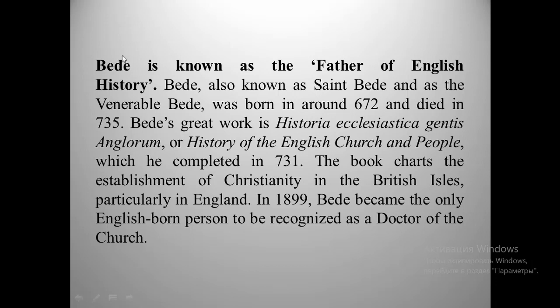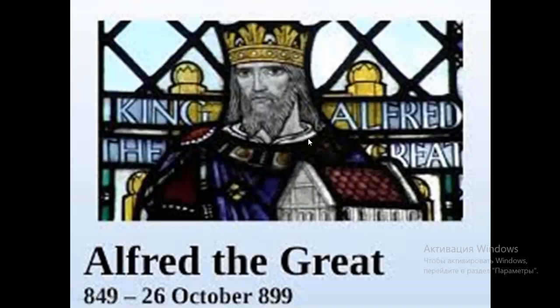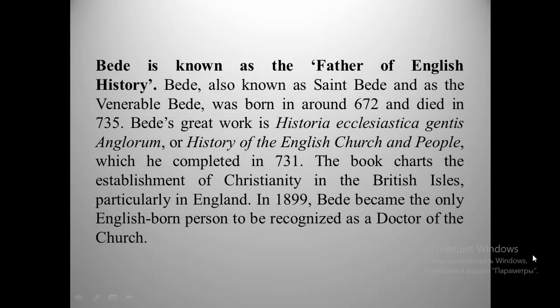Bede's works fall into three groups: grammatical and scientific, scriptural commentary, and historical and biographical. In 731 and 732, Bede completed his Historia Ecclesiastica. Divided into five books, it recorded events in Britain from the raids by Julius Caesar to the arrival in Kent of St. Augustine of Canterbury. For his sources, he claimed the authority of ancient letters, the traditions of our forefathers, and his own knowledge of contemporary events. Bede's Historia Ecclesiastica leaves gaps tantalizing to secular historians. Although overloaded with the miraculous, it is the work of a scholar anxious to assess the accuracy of his sources and to record only what he regarded as trustworthy evidence.